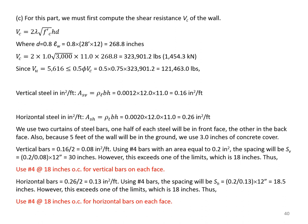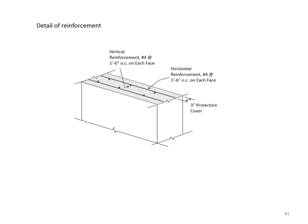Therefore, use #4 bars at 18 inches on center for both vertical and horizontal reinforcement on front and back face, with 3 inches of concrete cover, as shown in the reinforcement detail.